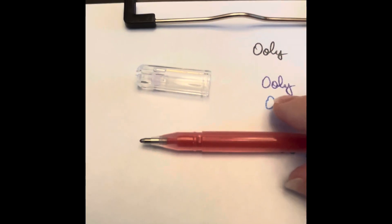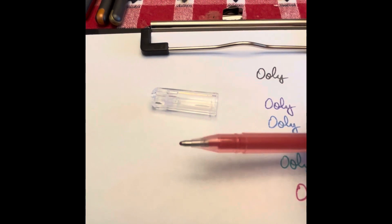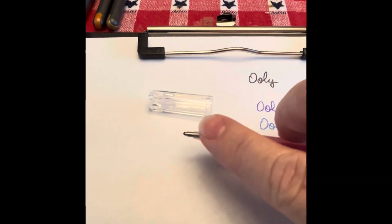Now let's talk about the tip on the Ooly. The Ooly has a one millimeter tip on it and you can see it's pretty bold.